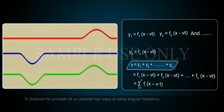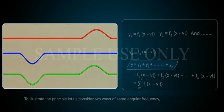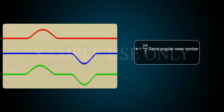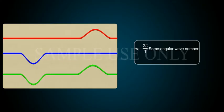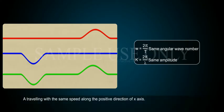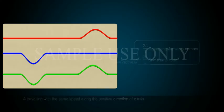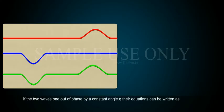To illustrate the principle, let us consider two waves of same angular frequency ω = 2πf = 2π/T, same angular wave number k = 2π/λ, same amplitude A, travelling with the same speed along the positive direction of x-axis. If the two waves,